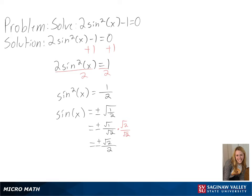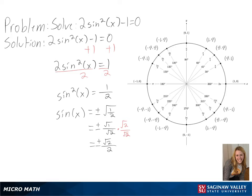Next, we need to look at a unit circle to see where sine of x equals positive or negative square root of 2 over 2. We can see here we will get π/4, 3π/4, 5π/4, and 7π/4 as our solutions.